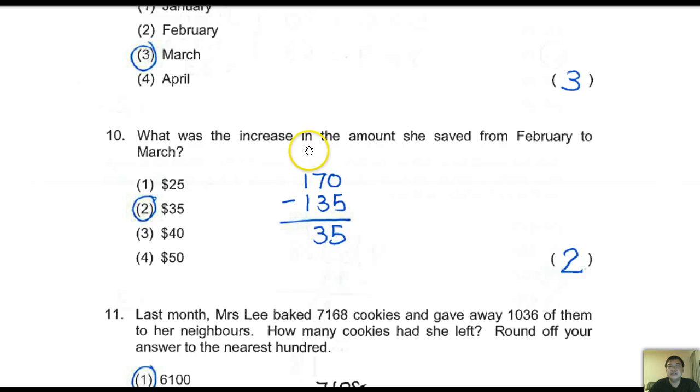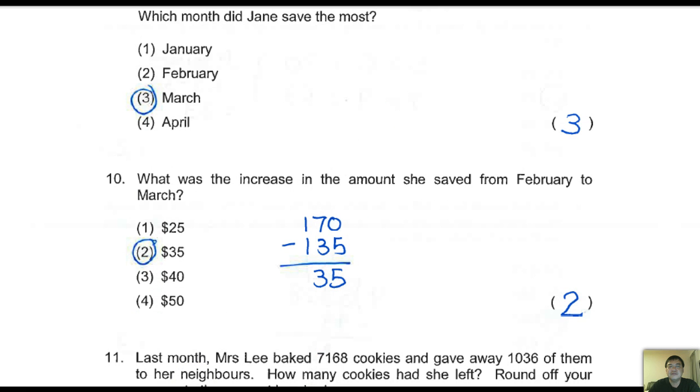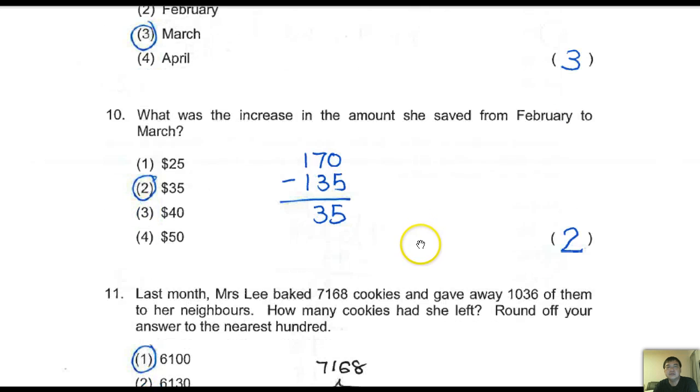Next, what was the increase in the amount she saved from February to March? 35. How do you do it? 170 takes away 135, which is 35. Let's take a look. What was the increase? This is okay.